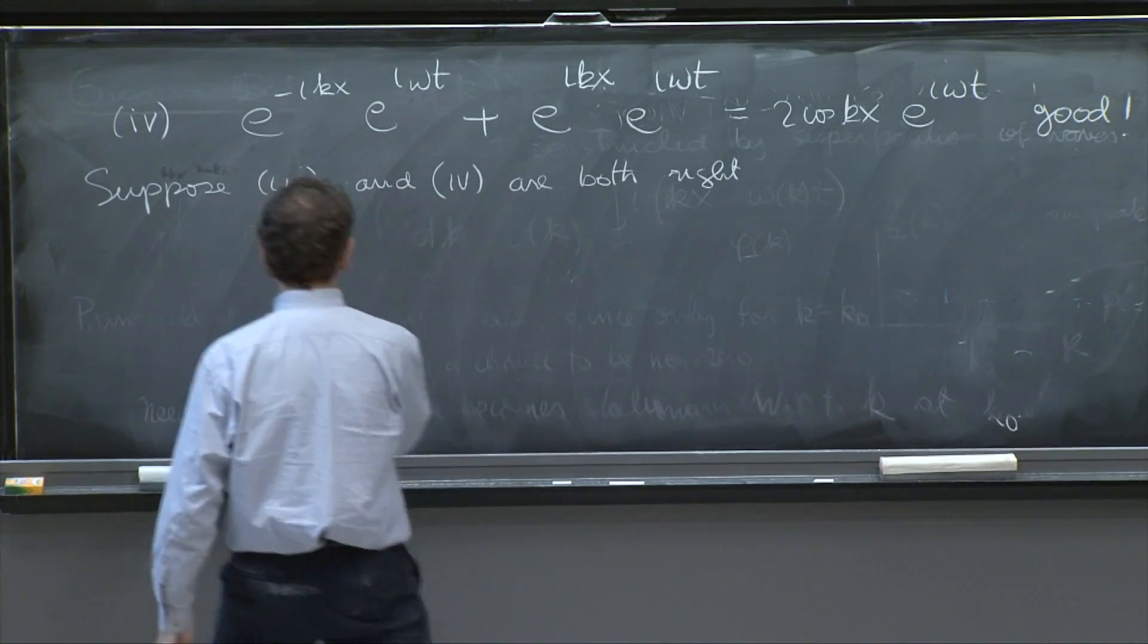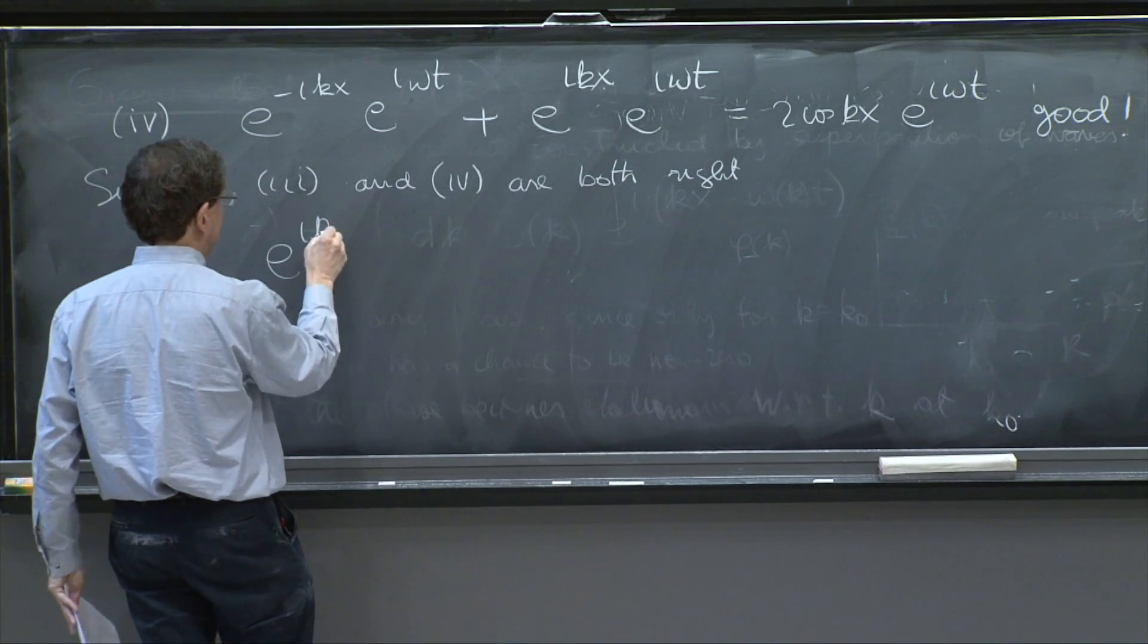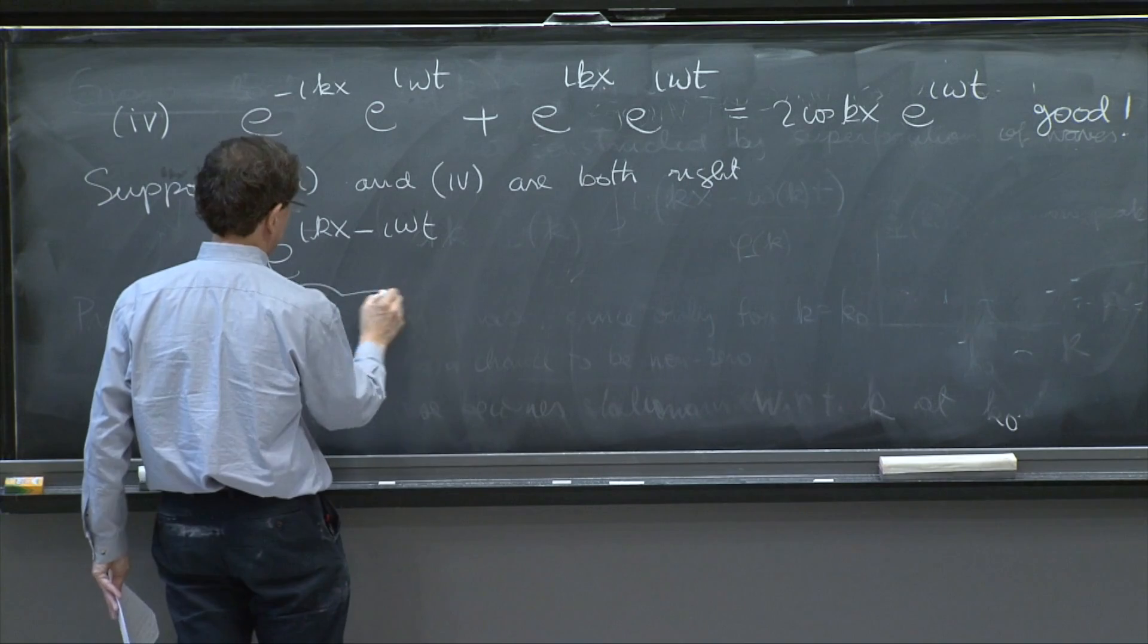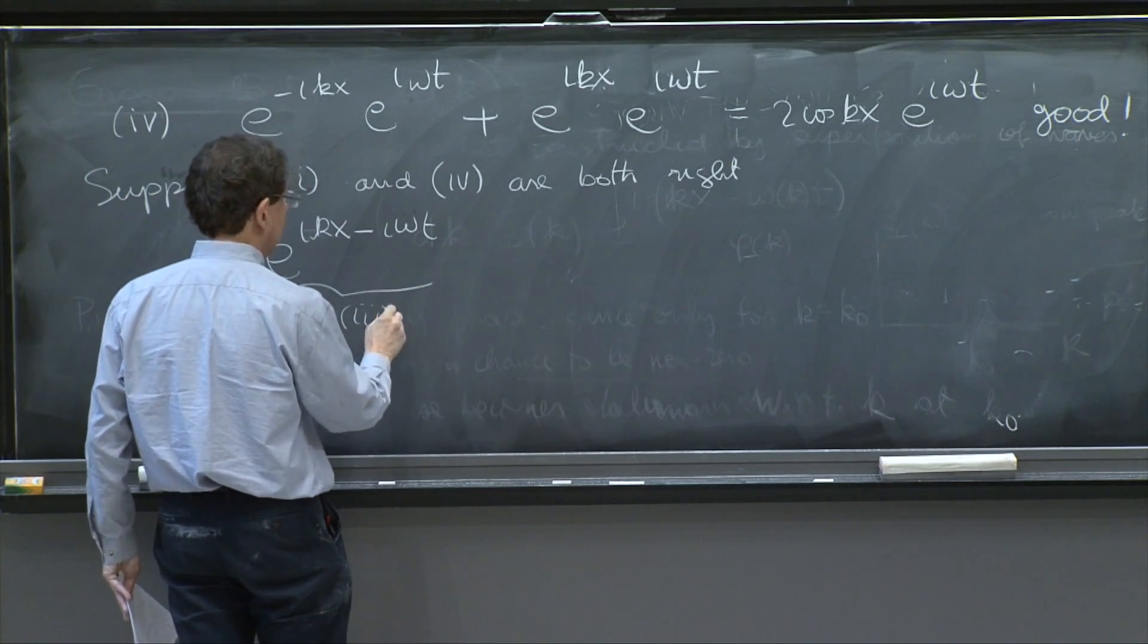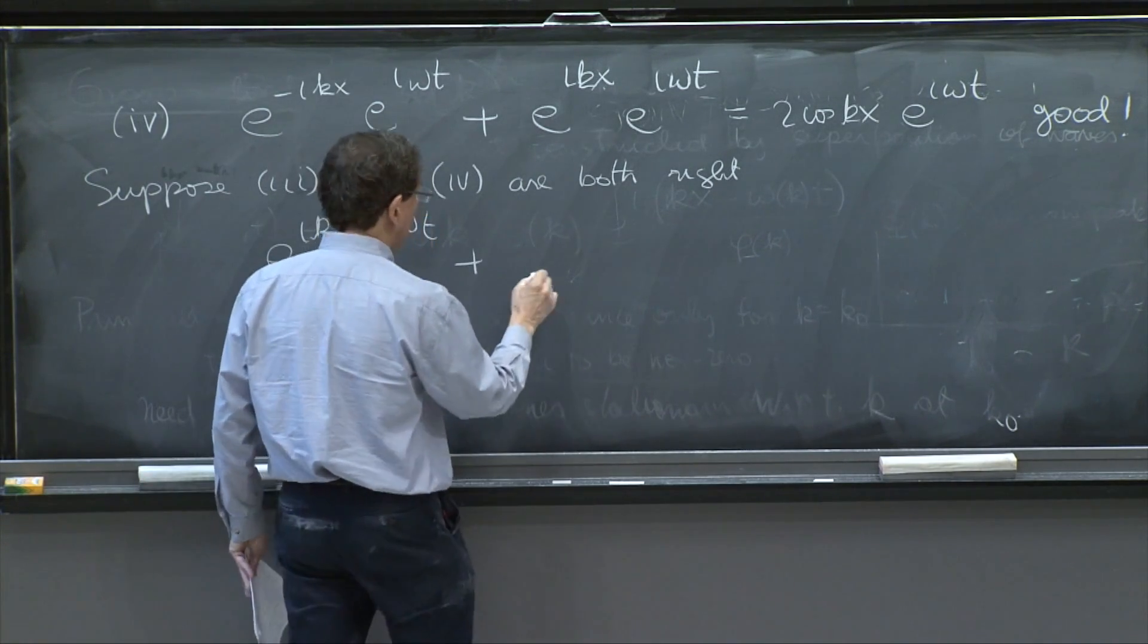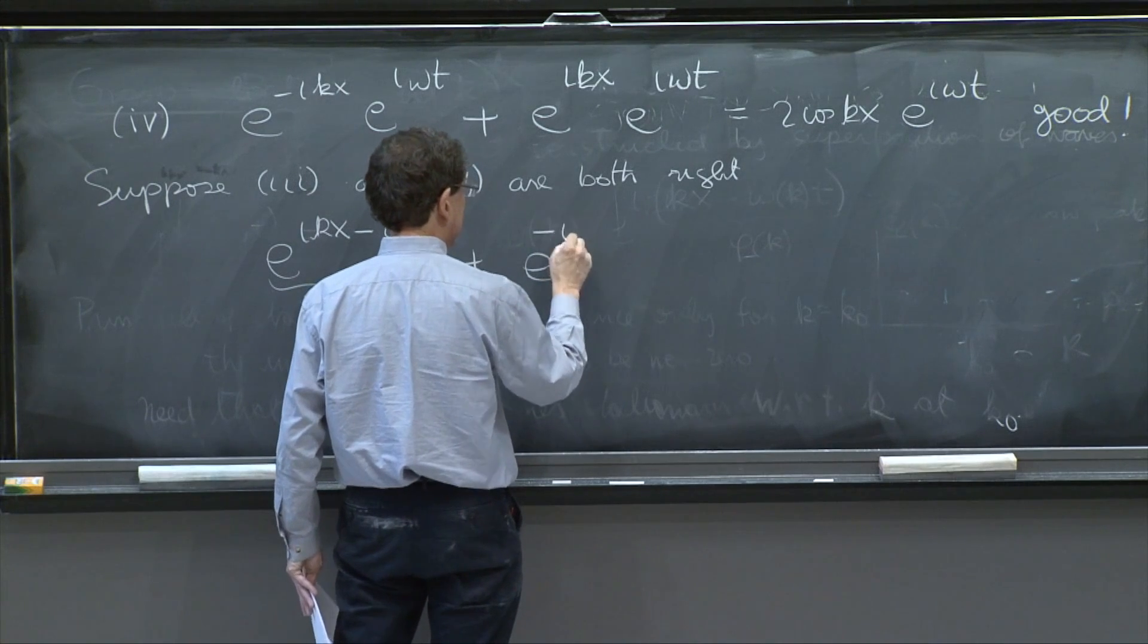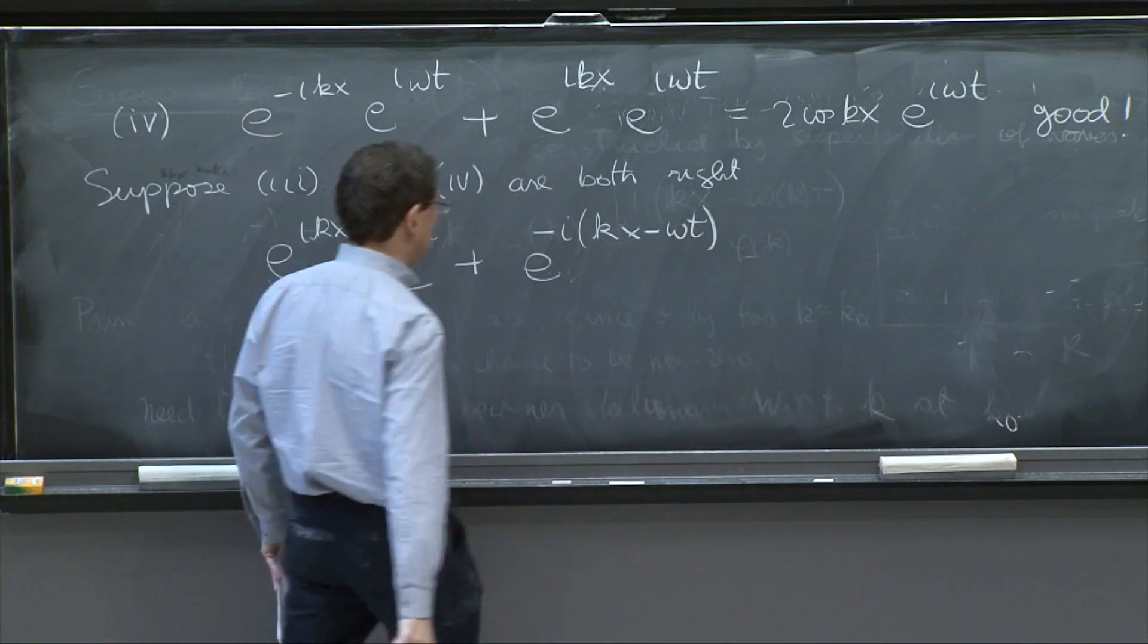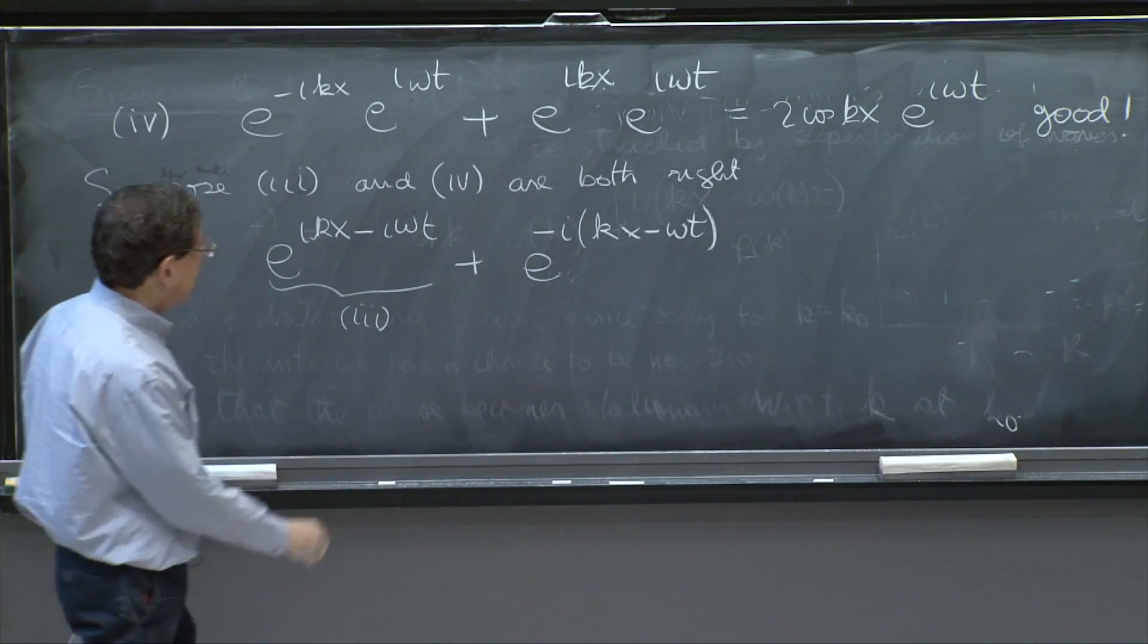So you can superimpose 3 and 4. e to the ikx minus i omega t. That's 3. You can add to it 4, which is e to the minus ikx plus i omega t. I factor a sign. And that's 4.